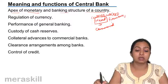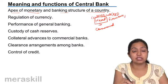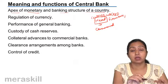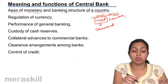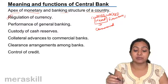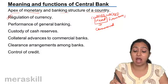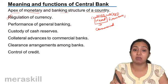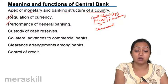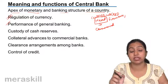As an apex bank, its main functions include regulation of currency — the amount of currency that is in circulation, demand deposits, and all. It also performs oversight of general banking: how banks are performing their general banking functions, whether they are not defaulting, and how they are functioning overall.